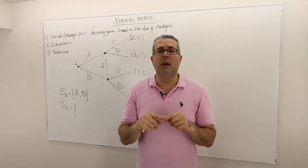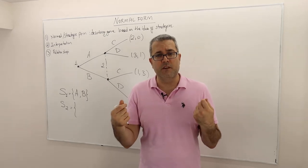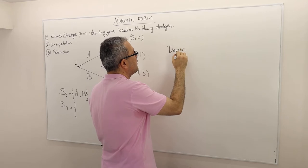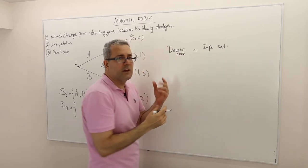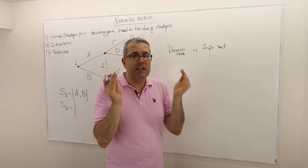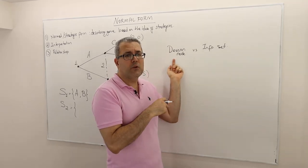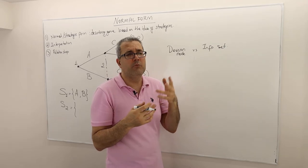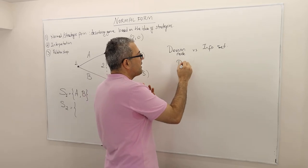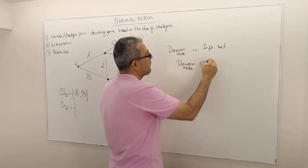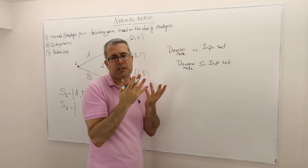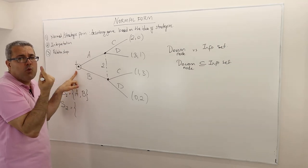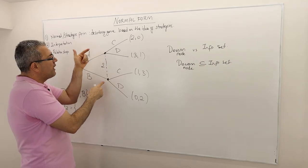Here's something important to underline: decision node versus info set. By definition, an information set is a collection of decision nodes. Every single decision node is therefore an information set — it's just a singleton set. An info set usually has more than one decision node. So when I say info set, I actually mean decision nodes as well, because every single decision node is an information set with only one decision node in it. This info set here has two decision nodes.